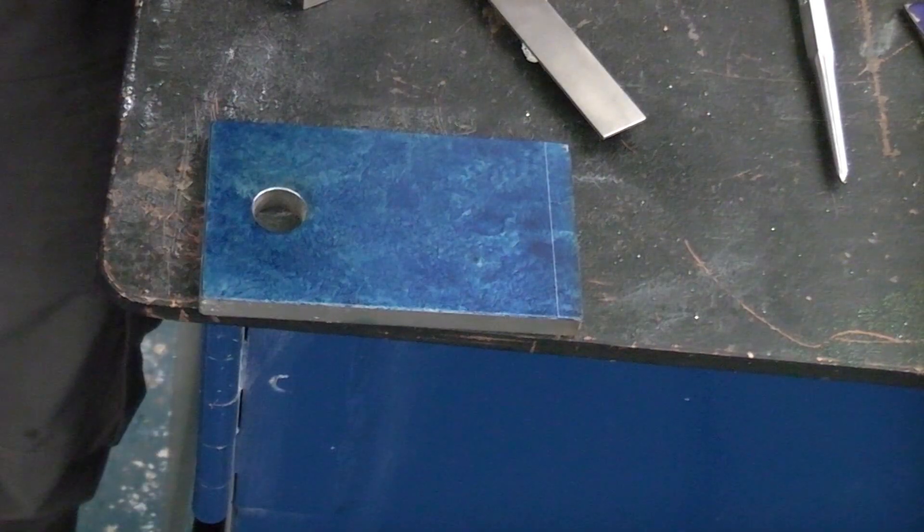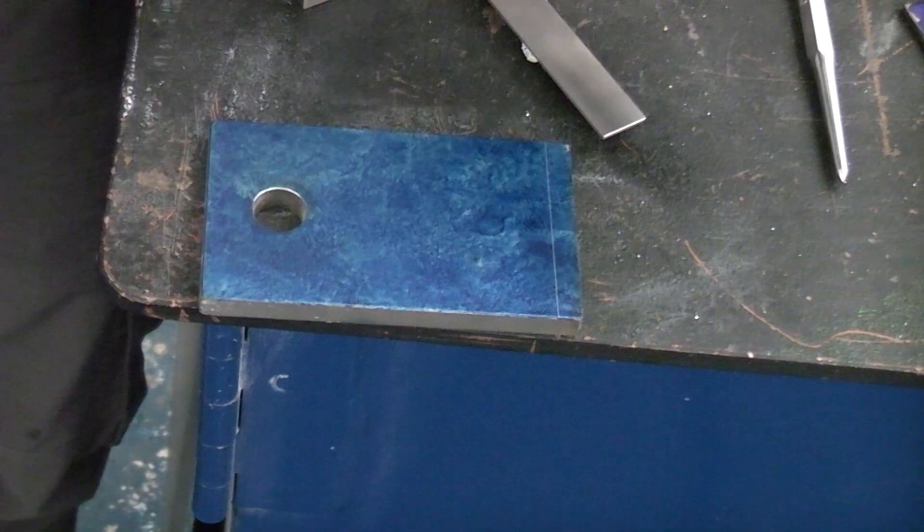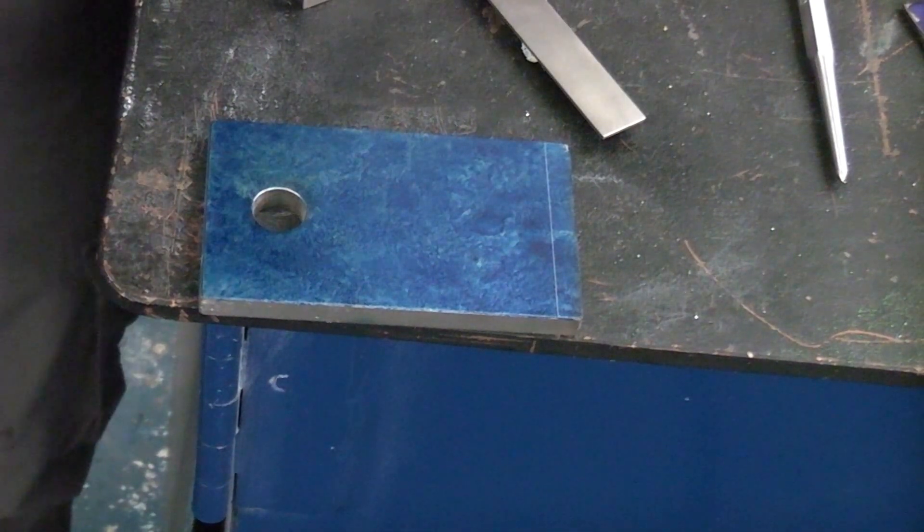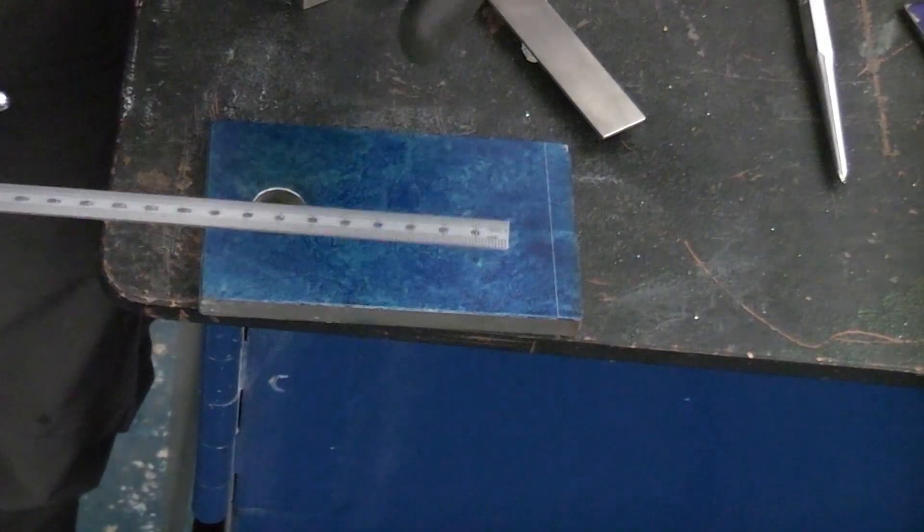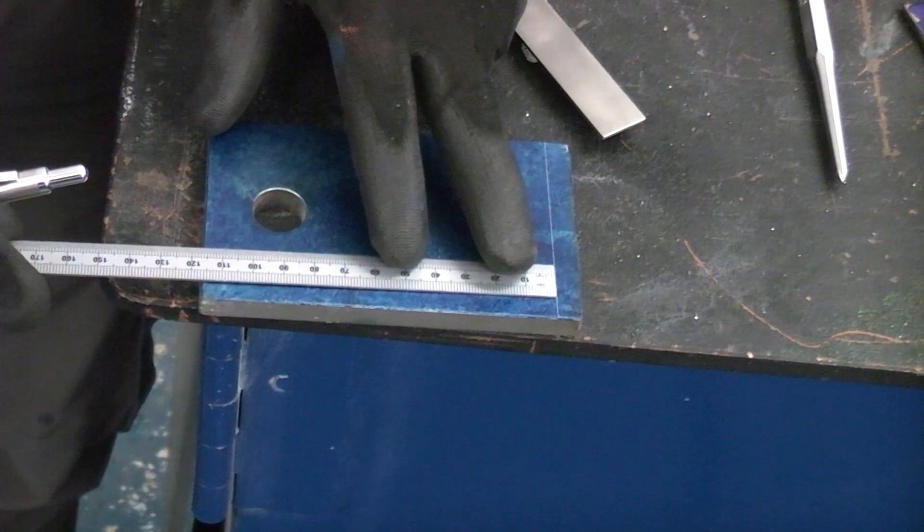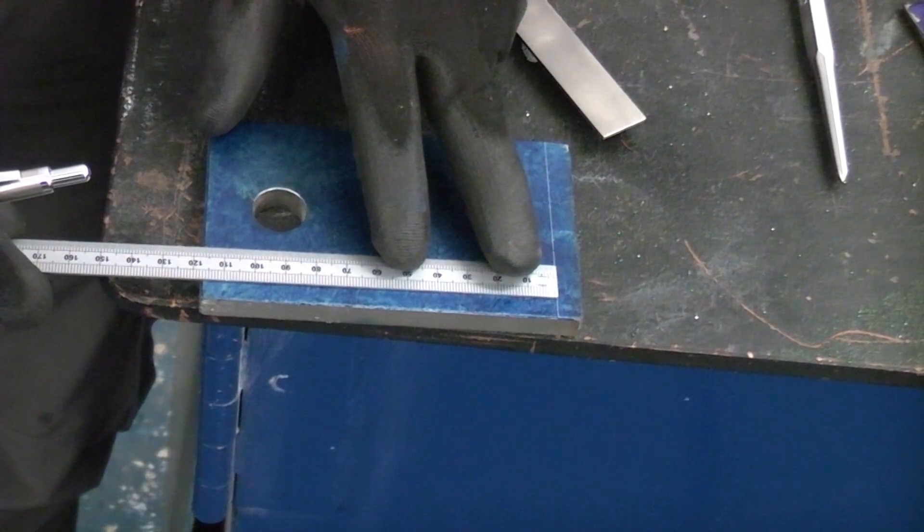If you were doing this in a professional workshop you would probably have a marking out table and also a vernier height gauge. When you're doing this at home you have to make do with a rule and a square and a scriber.